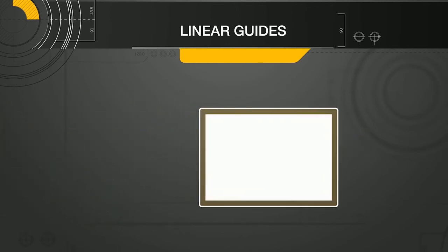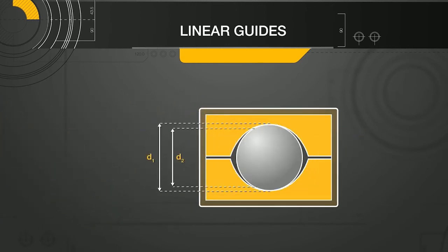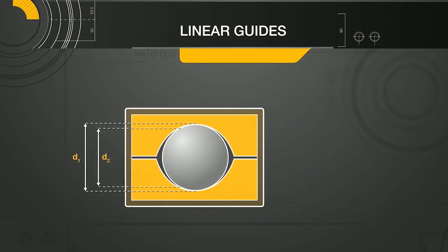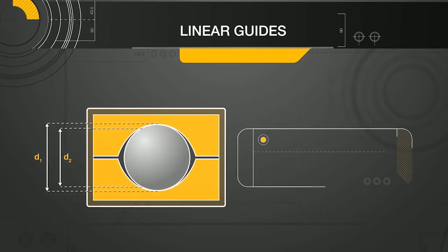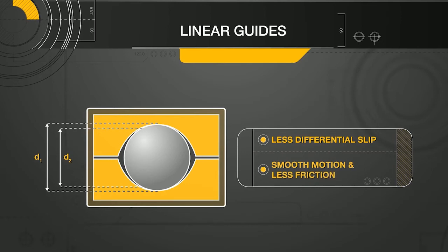In the circular arc contact, the difference in diameters across the contact area is very small. This causes less differential slip and allows for smoother motion with less friction.